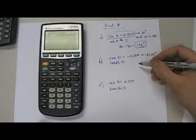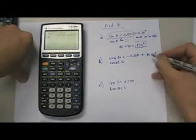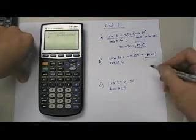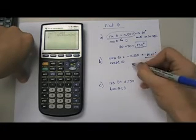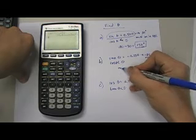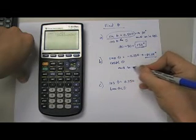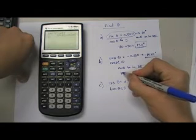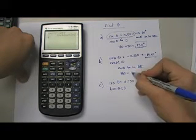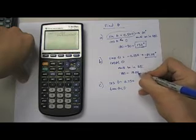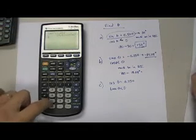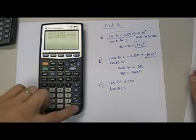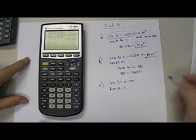So, this is a 14 degree reference angle. This is our reference angle. Our actual angle must be in quadrant 2. So again, we're going to say 180 minus 14.04 degrees. And we say 180 minus 14.04. We get 165.96.